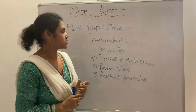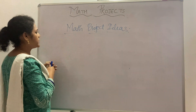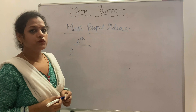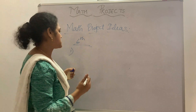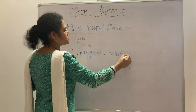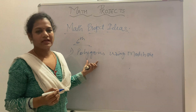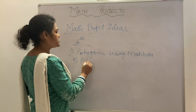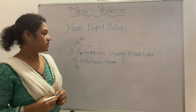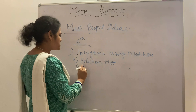For Class 6, the first project topic is making polygons using matchsticks. The second is a fraction tree. The third is a pictograph of your class showing which students have birthdays in a particular month.